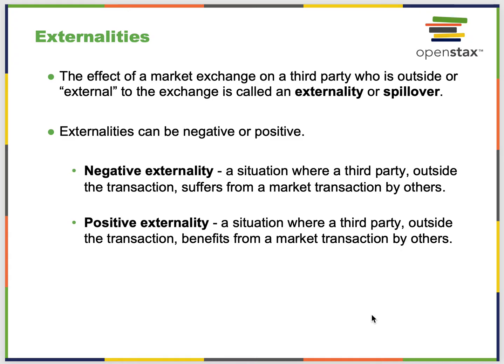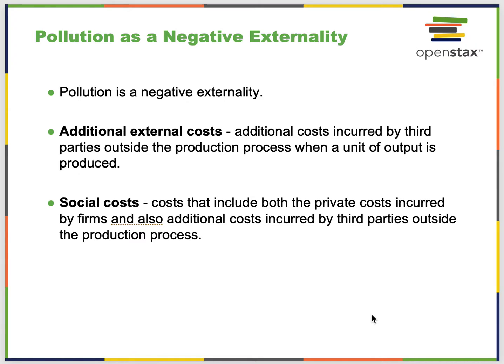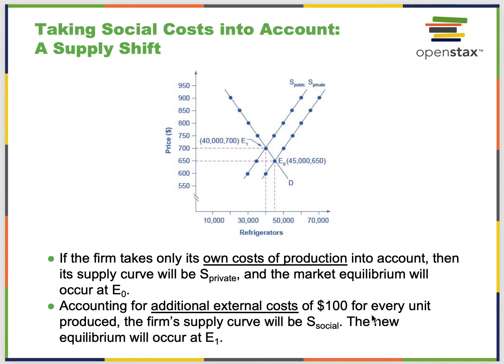Externalities are things where a third party either benefits or suffers from a transaction. A negative externality is a situation where a third party outside the transaction suffers from a market transaction — pollution falls into this. A positive externality is a situation where a third party outside the transaction benefits from a market transaction by others. The additional external costs fall on third parties outside the production unit, be it agriculture or industry, and include social costs such as health and longevity.